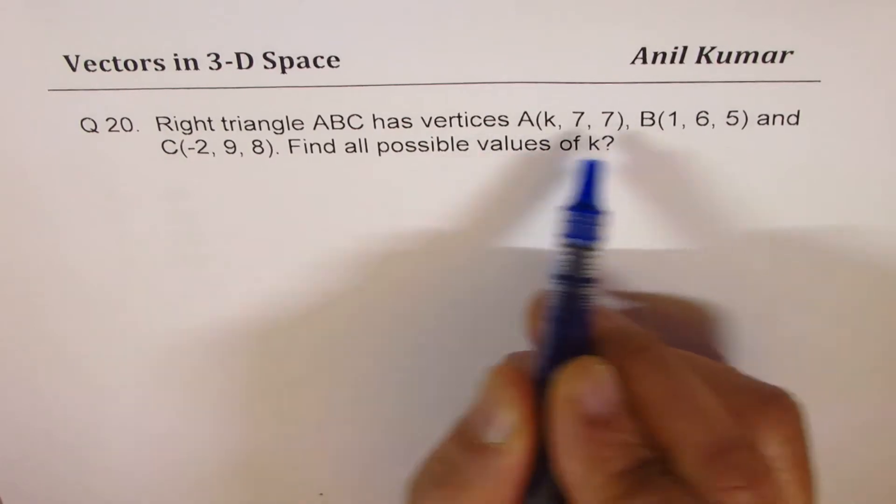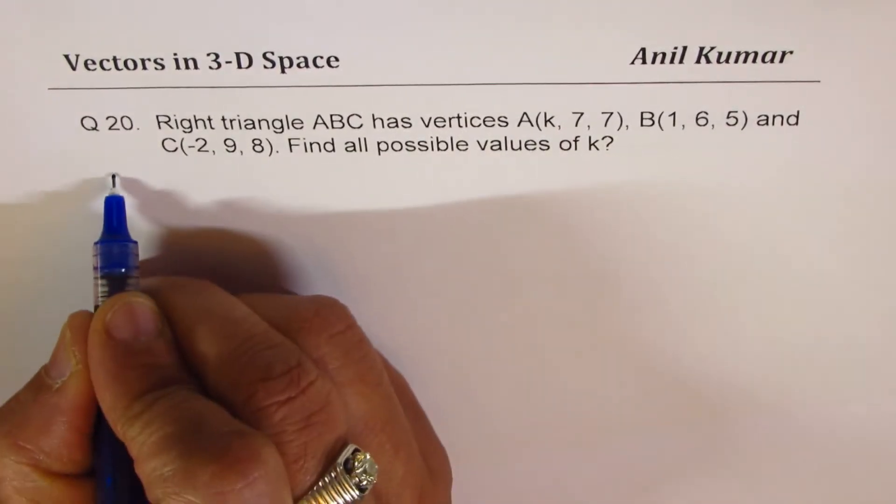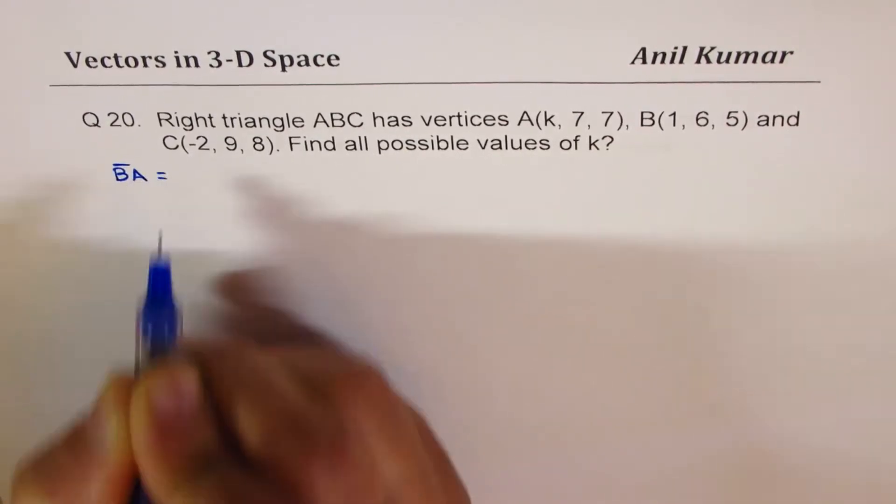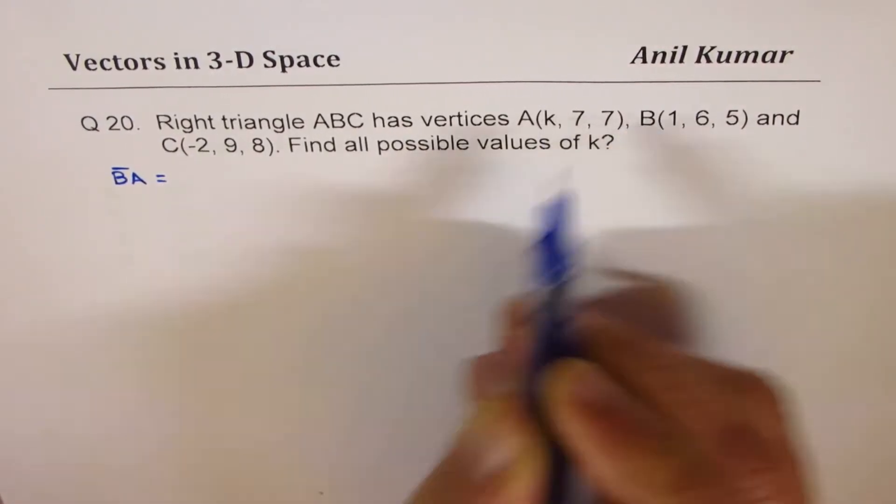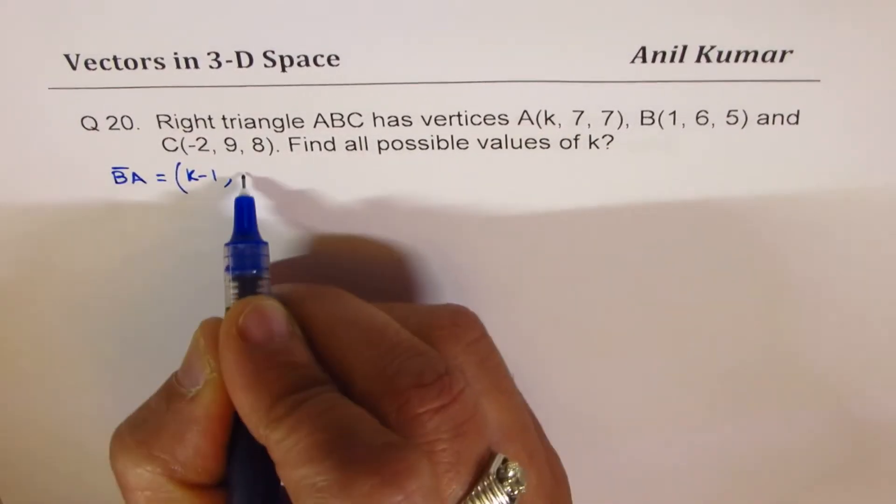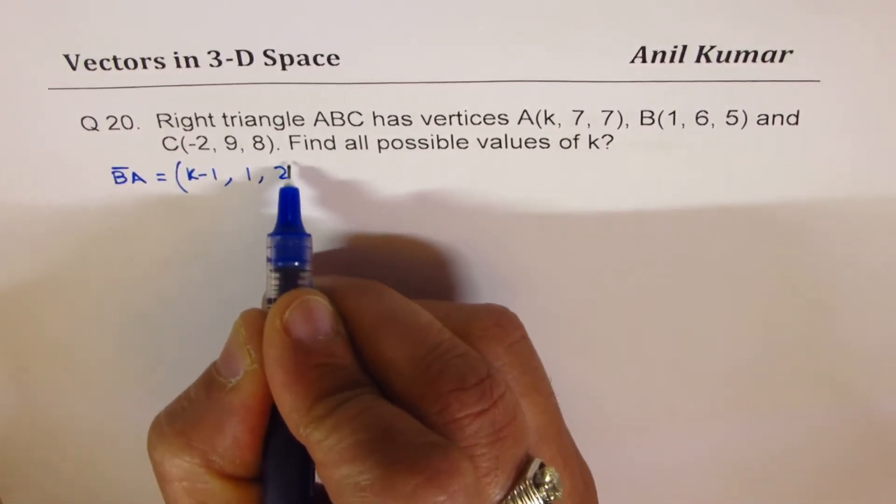So let's figure out what are these sides. Let me write K first, so I'm saying that my sides are BA, so BA will be equal to K minus 1, and then 7 minus 6 is 1, and 7 minus 5 is 2, so that is BA.